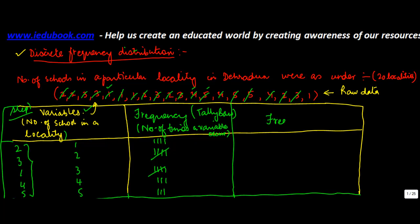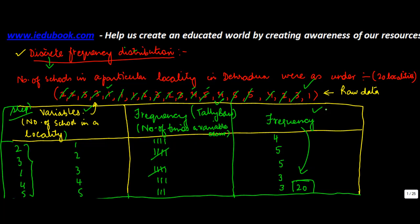Then you count and put in the frequency value. So how many bars are there? The counts come out as: 4, 5, 5, 3, 3 — and 3 and 3 is 6, 6 and 10 is 16, 16 and 4 is 20. So the total of the frequency is 20, which is also the number of times the raw data occurs. This is what a discrete frequency distribution is — you put the raw data in the form of a table using tally marks and then count the frequency.